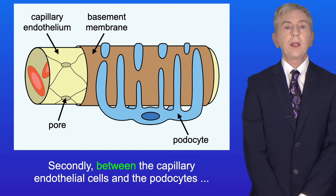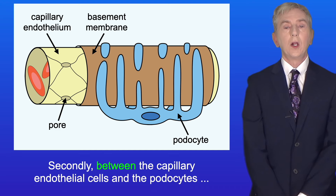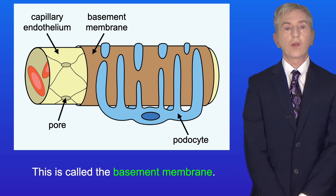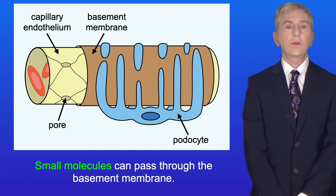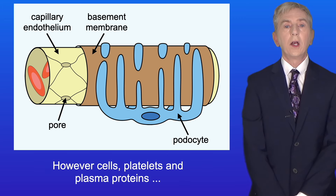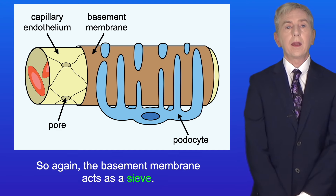Between the capillary endothelial cells and the podocytes, we have a layer of collagen and other proteins. This is called the basement membrane. Small molecules can pass through the basement membrane. However, cells, platelets and plasma proteins are too large to pass through the basement membrane. So again, the basement membrane acts as a sieve.